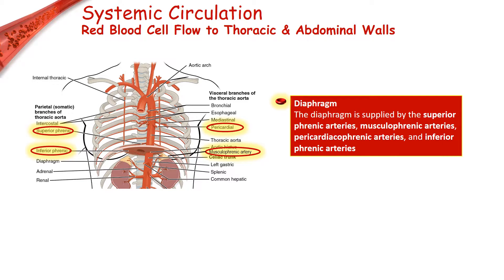The diaphragm is supplied by three sets of paired arteries: the superior phrenic arteries, which branch from the descending aorta; the musculophrenic and pericardicophrenic arteries, which branch from the internal thoracic artery; and the inferior phrenic arteries, which emerge from the descending abdominal aorta.